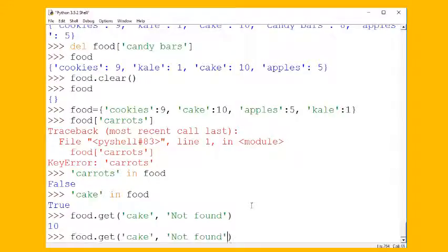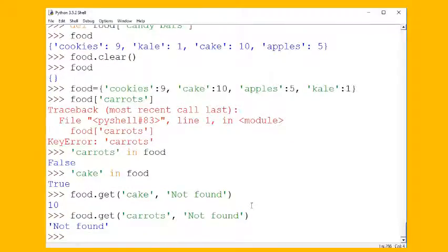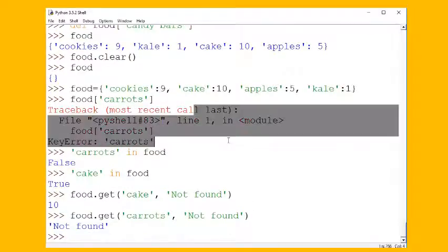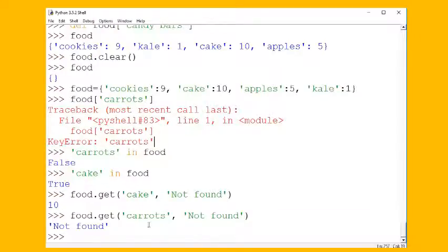But what if we were to do that with carrots? Well, instead of having that ugly red error message that we got before, now we have this really nice and clear 'not found' message. So get is a little bit nicer way to look something up. If you don't find it, your whole program doesn't crash with red error messages, you just get back the simple 'not found' message.